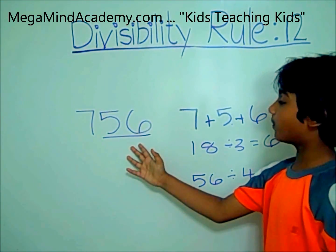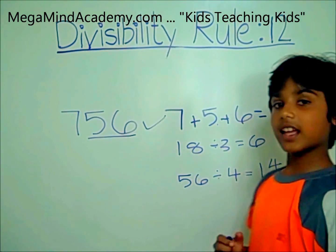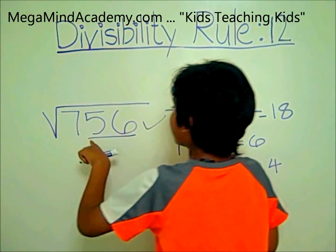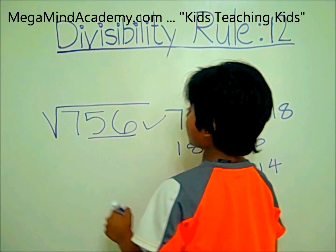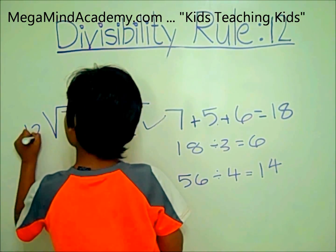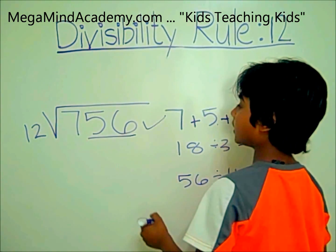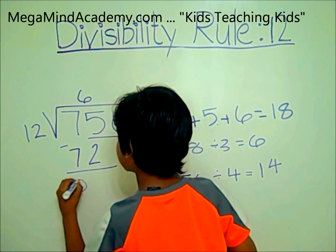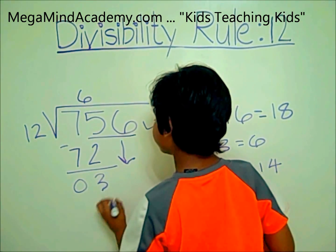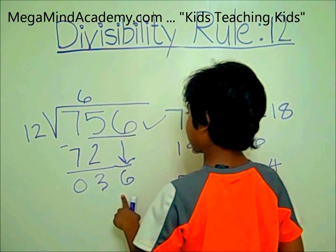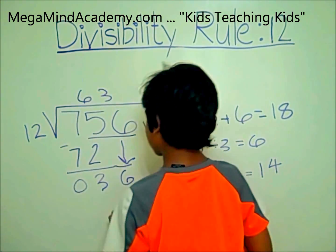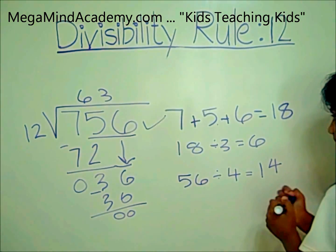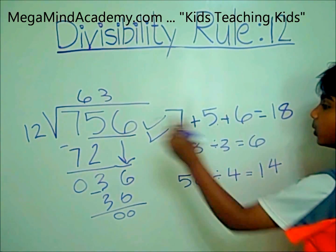So that means 756 is divisible by 12. Let's check. 756 goes inside the division sign and 12 goes outside. 12 times 6 is 72. 75 minus 72 equals 3, then 6 comes down — so now it's 36. 12 times 3 is 36. 36 minus 36 equals 0. So that means 756 is divisible by 12.